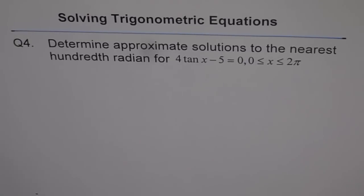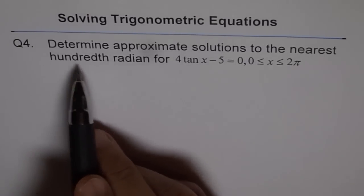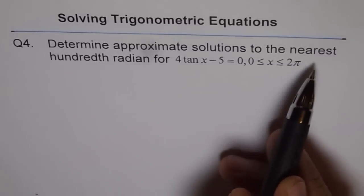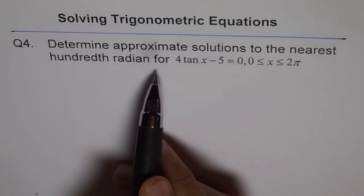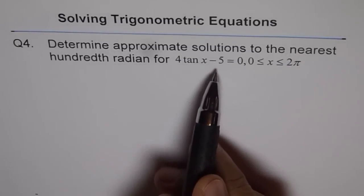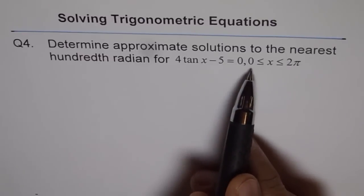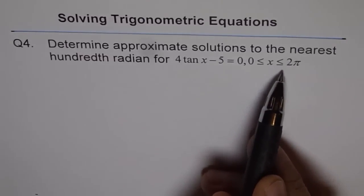Solving trigonometric equations. Question 4: Determine approximate solutions to the nearest hundredth radian for 4 tan x minus 5 equals 0, where x is greater than or equal to 0 and less than or equal to 2π.